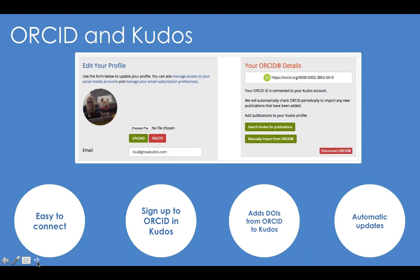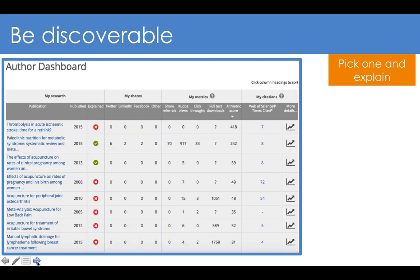In QDOS you have an author dashboard with publications that may be populated from your ORCID account when you connect them, or from manual searching and claiming them to your account, or because we work with over 60 publishers who have told us that a publication is yours. When you log in or register, you may find some publications already in there. You could find quite an extensive list — we just say, why not pick one and start explaining it? You'll get a really good sense of how easy QDOS is to use and how quick it is.